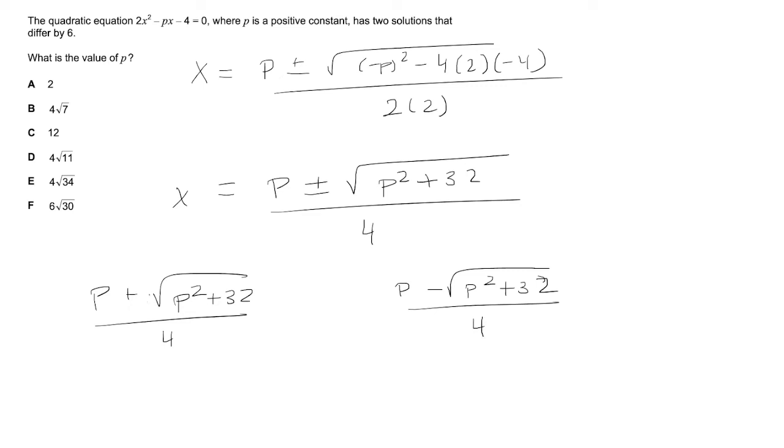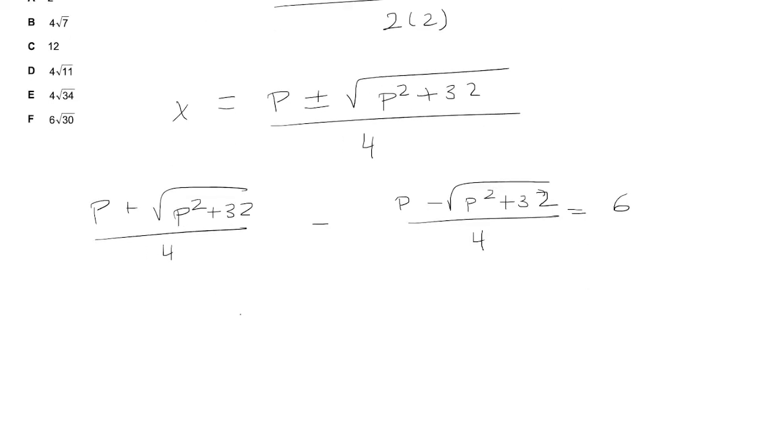We know the one on the left is for sure going to be positive because p is a positive constant, so we would expect this to be greater than this one. So when I subtract this, the two solutions differ by 6, so the difference has to be 6. So now when I subtract...